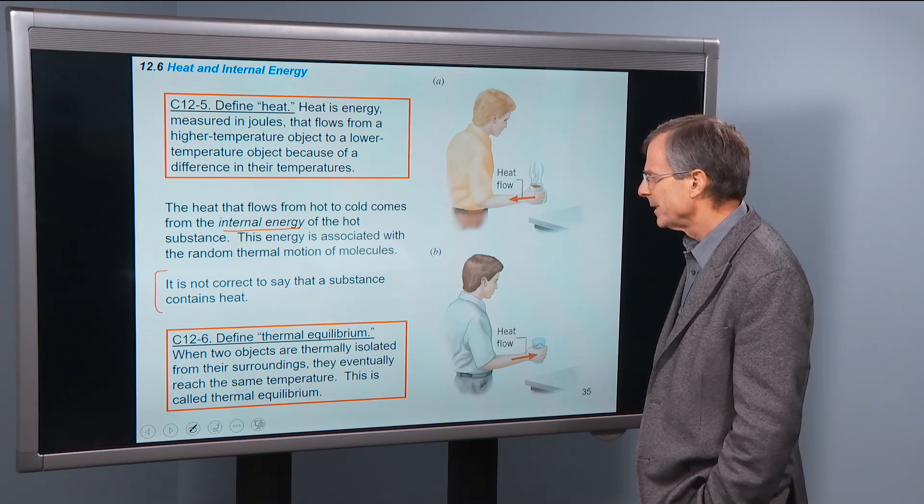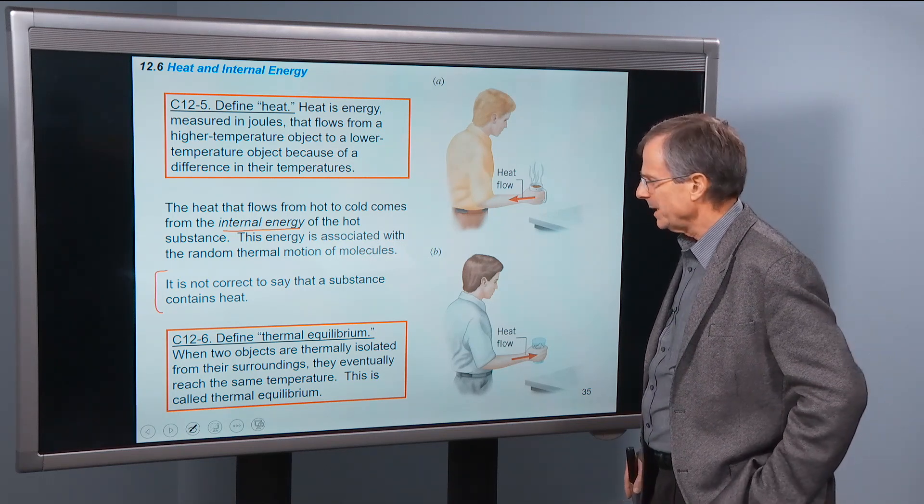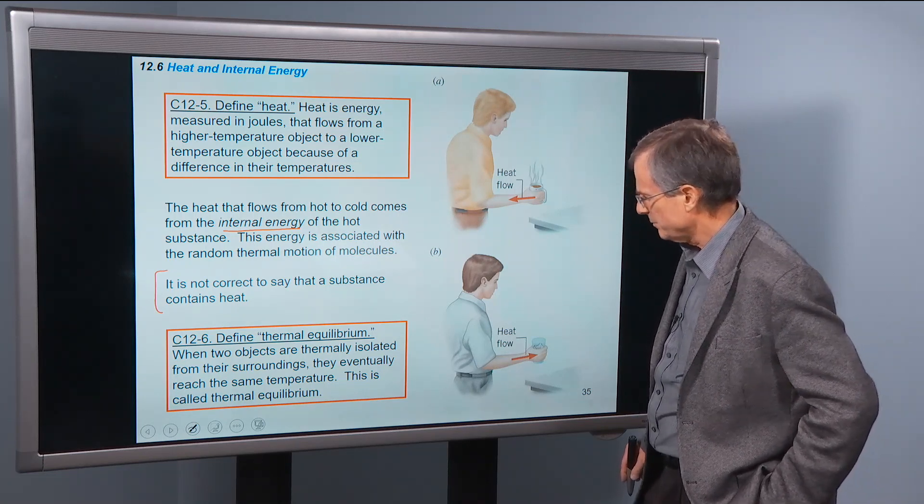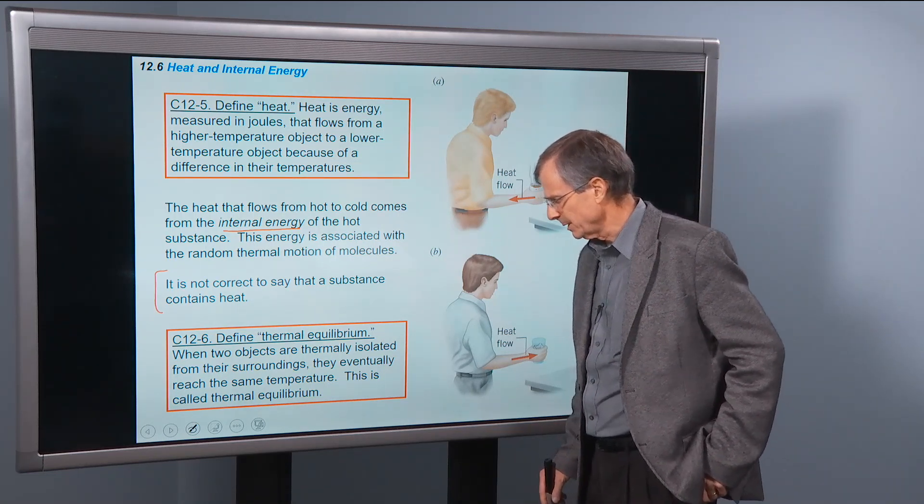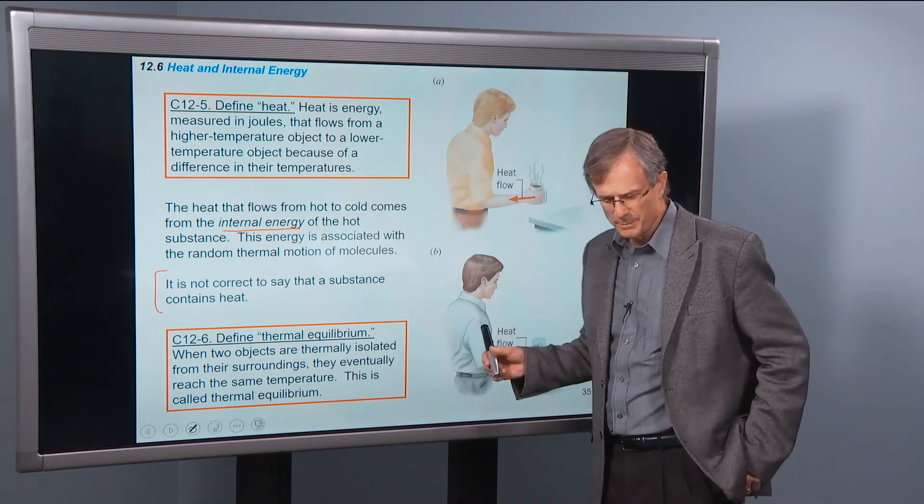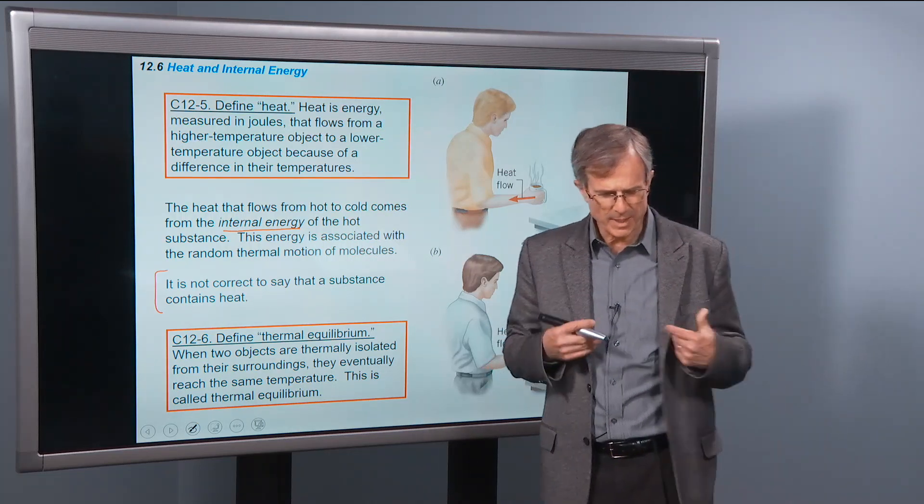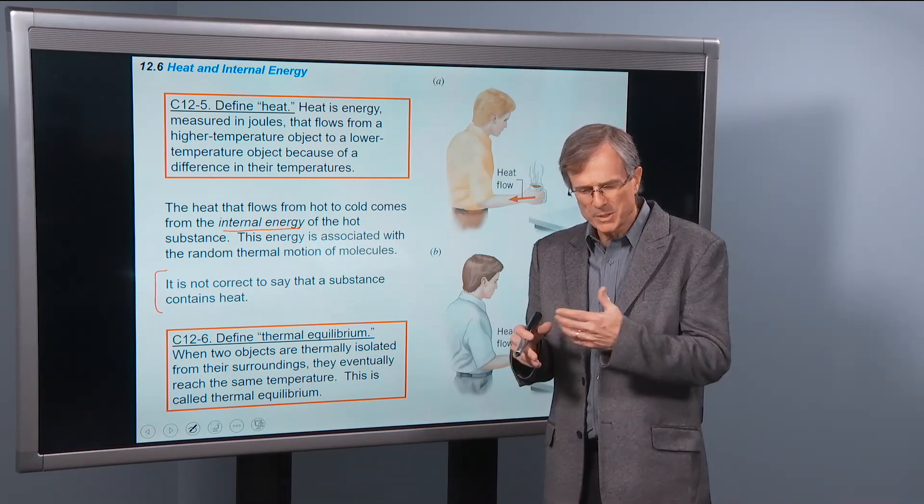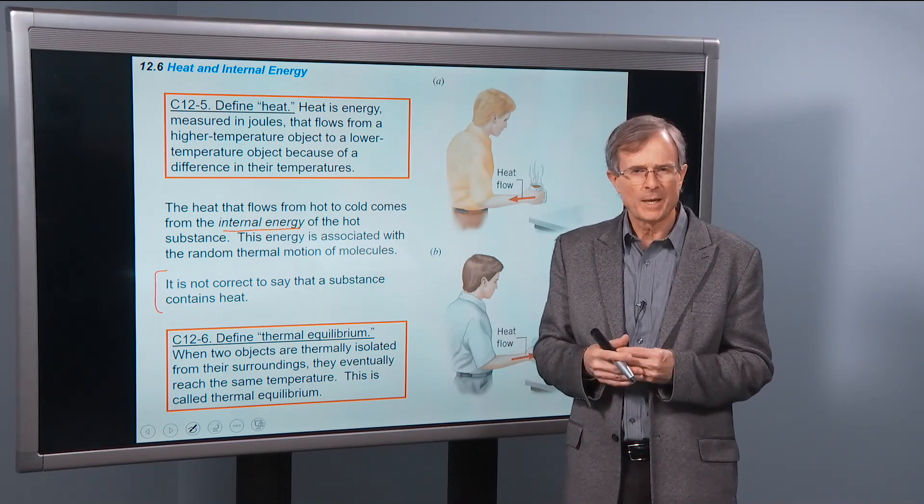Define thermal equilibrium. When two objects are thermally isolated from their surroundings, they eventually reach the same temperature. This is called thermal equilibrium. The human body is actually a bad example for that, because it has its own mechanism for regulating its own temperature. So it's mostly inanimate objects that matter here.